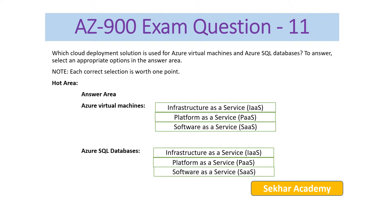Let's start. AZ-900 exam question number 11: which cloud deployment solution is used for Azure virtual machines and Azure SQL databases? To answer, select an appropriate option in the answer area. Each correct selection is worth one point. Here are the answer statements. For Azure virtual machines, the options are: infrastructure as a service, platform as a service, or software as a service. The same options apply for Azure SQL databases.